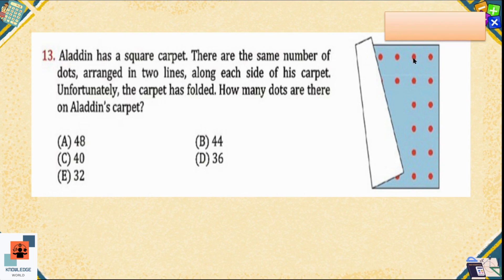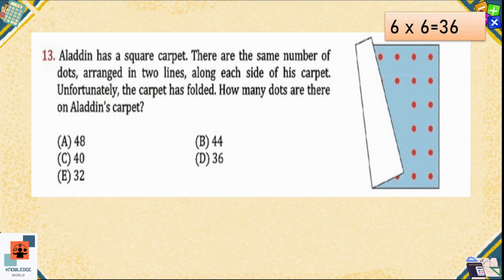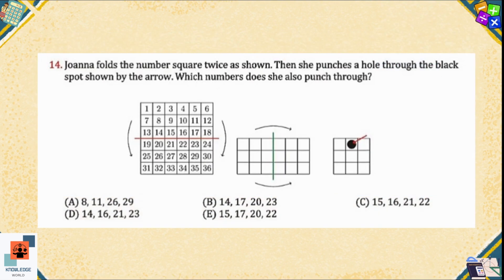There are six dots in the first column, and six dots will be in the first row. To find the total number of dots we multiply: six times six equals 36. Option D is the correct answer — there are 36 dots on Aladdin's carpet.